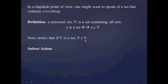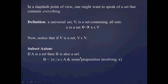To set up my first argument against the existence of this universal set V, I'd like to remind you of the subset axiom covered in Part 2, which says that if some object A is a set, then B is also a set, where B is defined as all objects X such that X is a member of A and some proposition involving X holds. B is going to be a subset of A.